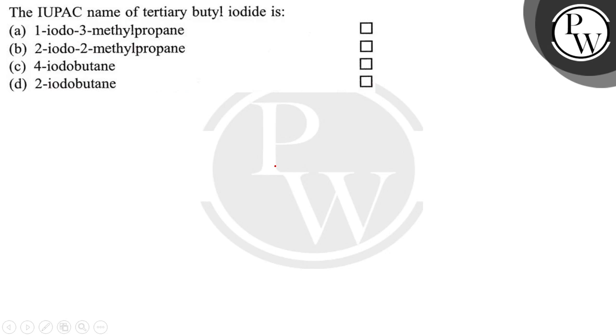Hello Victor, let's read the question. The question says the IUPAC name of tertiary butyl iodide is: 1-iodo-3-methylpropane, 2-iodo-2-methylpropane, 4-iodobutane, and 2-iodobutane. So let's do the question.